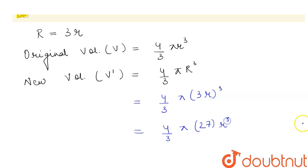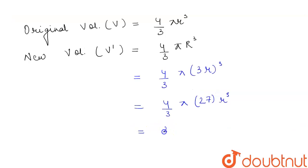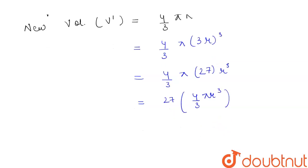And this will be r cube. And we can write this to be equal to 27 into four by three pi r cube. Now we see that this is the volume of our original sphere.